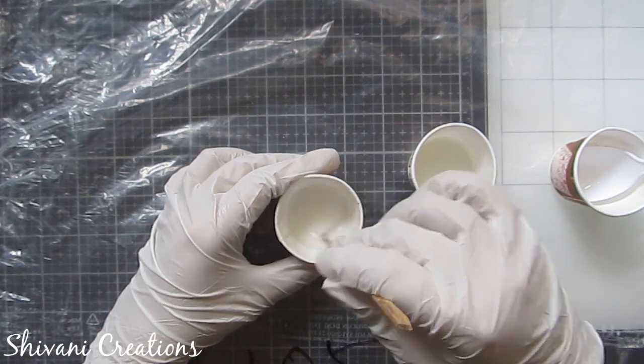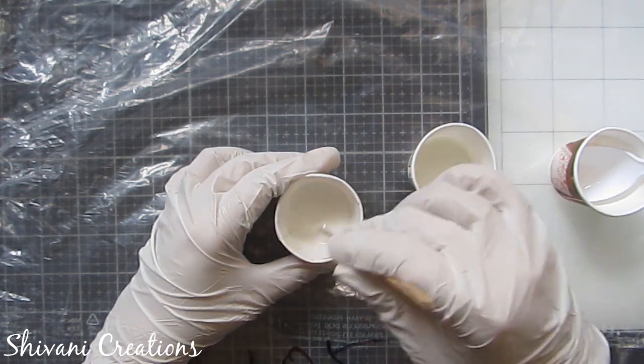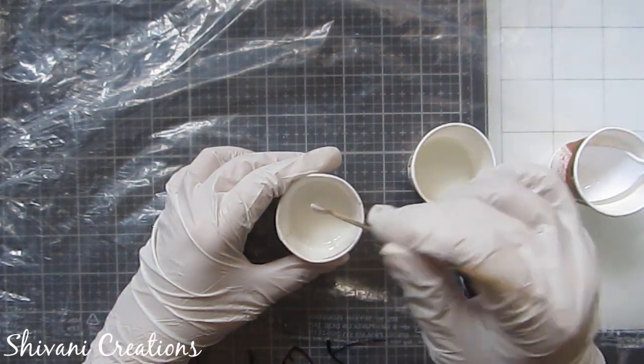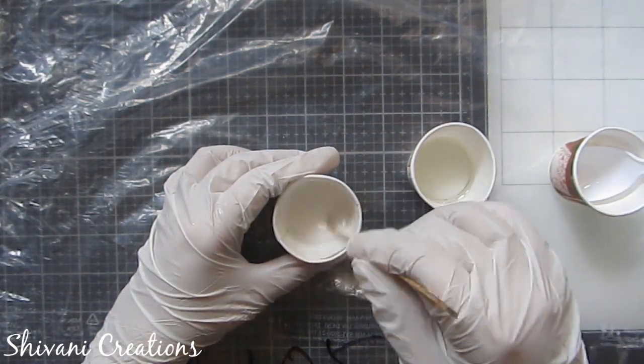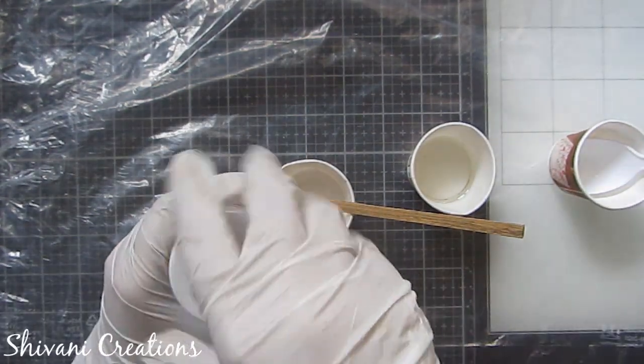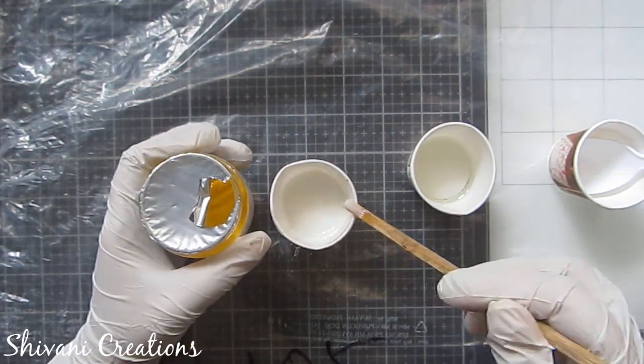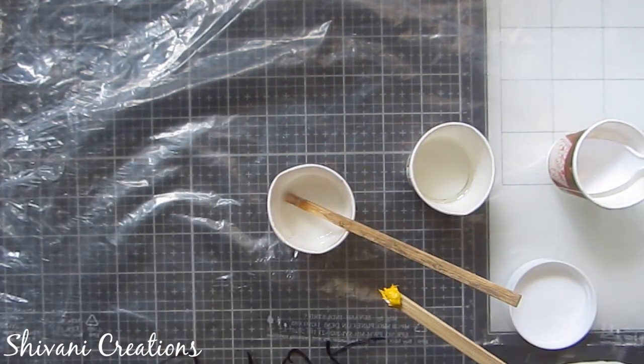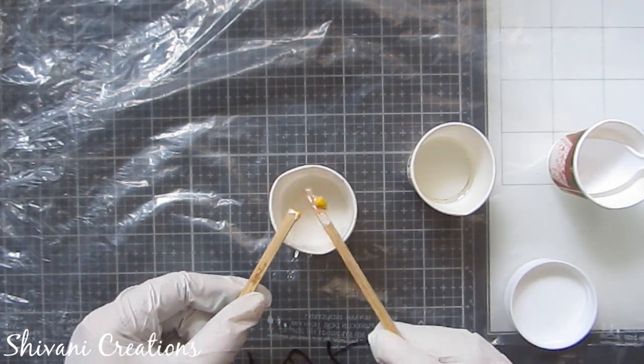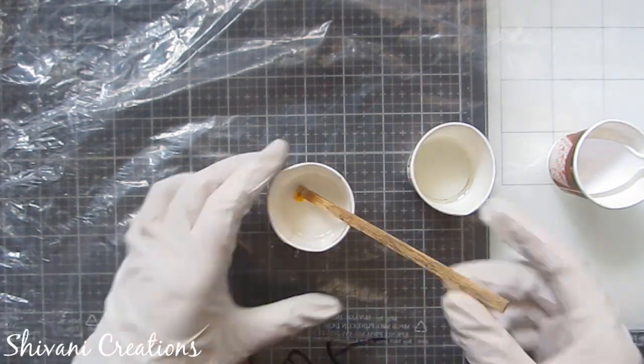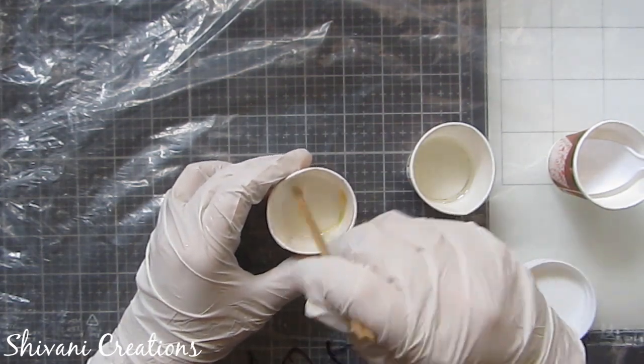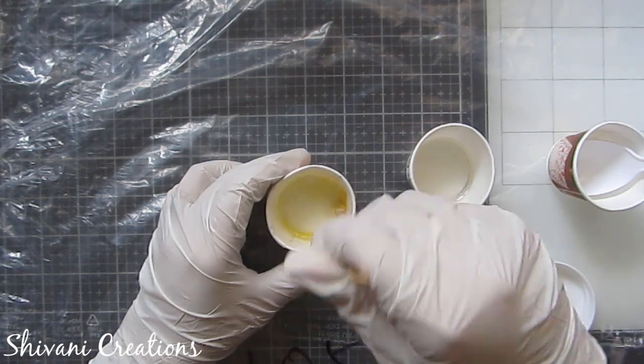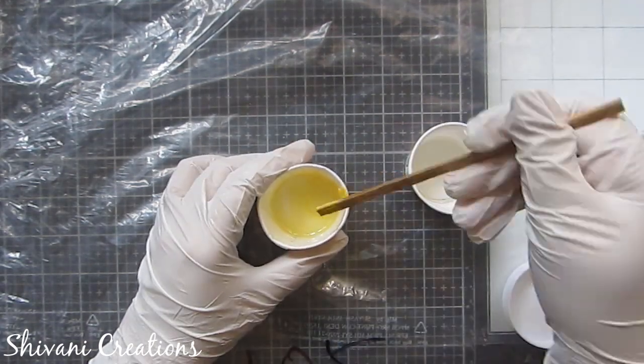So if you want to create white keychains you can directly pour this. But since I want to create a little lemon yellow shade, I am going to add a little bit of yellow resin pigment. I am taking this yellow pigment by Little Birdie again and adding a small touch of yellow into this and now mix it very well till you will get your desired color.